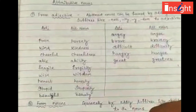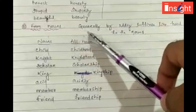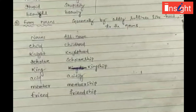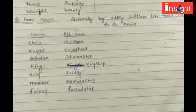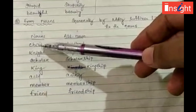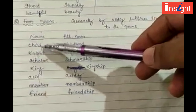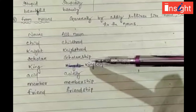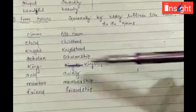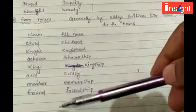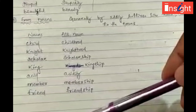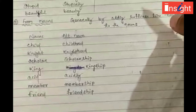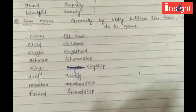Attributive nouns can also be formed from nouns by adding suffixes like -hood and -ship. Examples: child → childhood, knight → knighthood, scholar → scholarship, king → kingship, member → membership, friend → friendship. Also, acid is a noun and from it we get acidity.